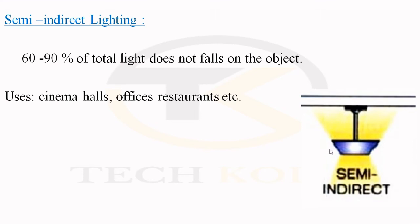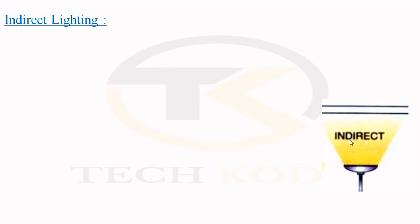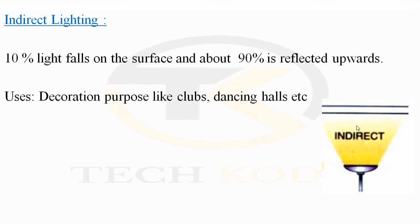The reflector is also designed so that maximum light emits upwards. Next is indirect lighting. In this system, only about 10% of light falls on the surface and 90% reflects upwards, as you can see here. It is mostly used for decoration purposes in cinema halls, hotels, dancing halls, and clubs. The reflectors are fitted in such a way that the source of lighting is normally not visible.